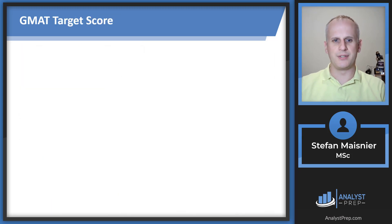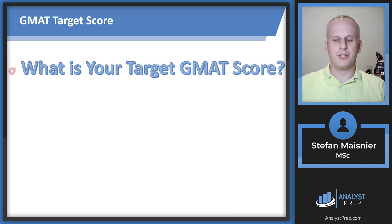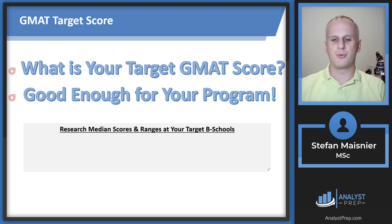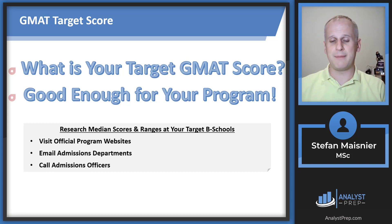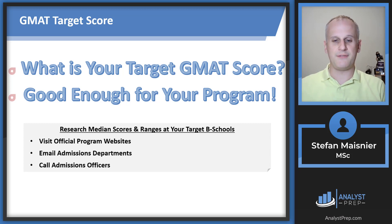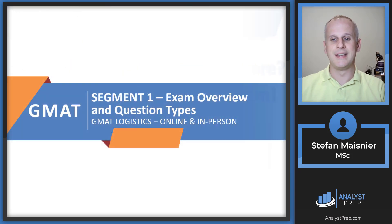This all leads to the big question: what is a good target GMAT score? The answer is: good enough for your program. Immediately after finishing this video, research median scores and ranges at your target business schools — visit official program websites, email admissions departments, and don't be afraid to call admissions officers directly. Knowing your target is the most important first step as you begin your GMAT journey. You don't want to be preparing for a 700 if you only need a 620, nor plan for a 650 if your target school has a median of 720.